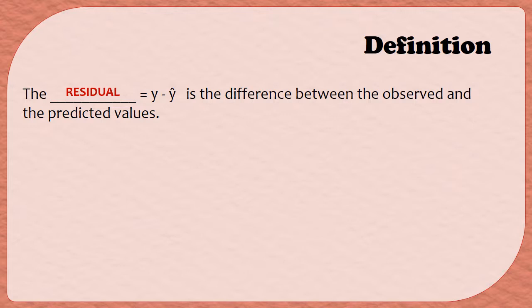Remember from the last video that the variable that wears the hat is the variable we were predicting. So in this formula, y is being used to represent the actual value that was observed from your data, and the y hat is being used to represent the prediction you get from your least squares regression line.